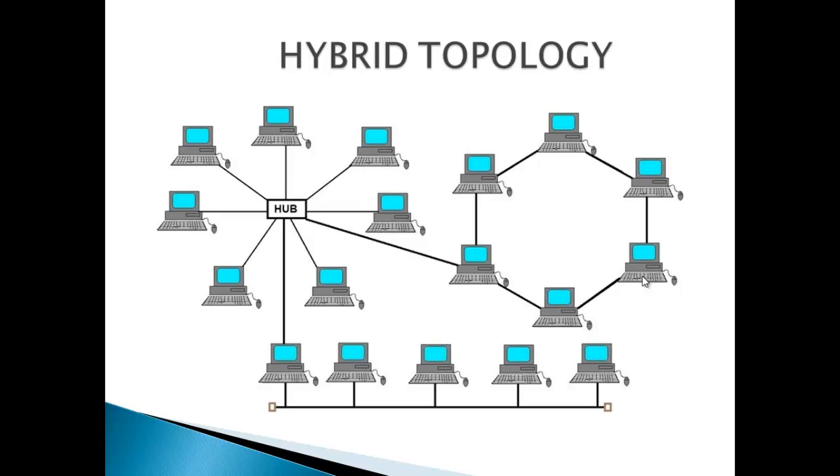For example, connecting ring topology in one department with bus topology in another department results in hybrid topology. Connecting same type of topology is not termed as hybrid topology. Star ring and star bus networks are the common examples of hybrid network. Look at the picture.